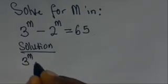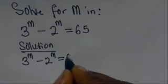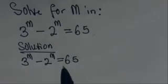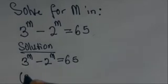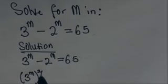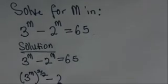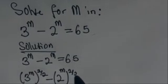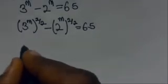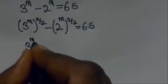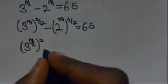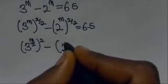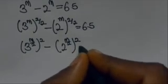We have 3 raised to the power m minus 2 raised to the power m equals 65. Let's express this as 3 raised to the power m, raised to the power 2 divided by 2, minus 2 raised to the power m, raised to the power 2 divided by 2, equals 65. This is also the same as 3 raised to the power m over 2, raised to the power 2, minus 2 raised to the power m over 2, raised to the power 2, equals 65.